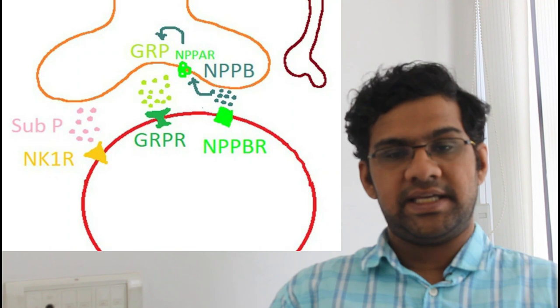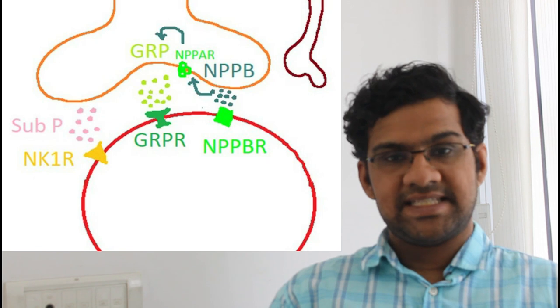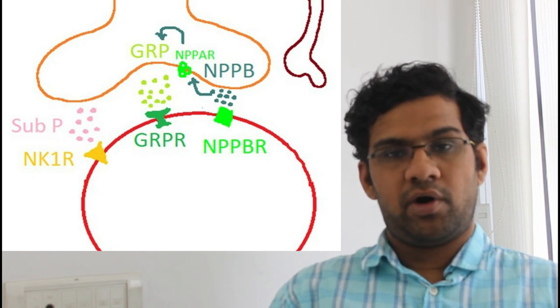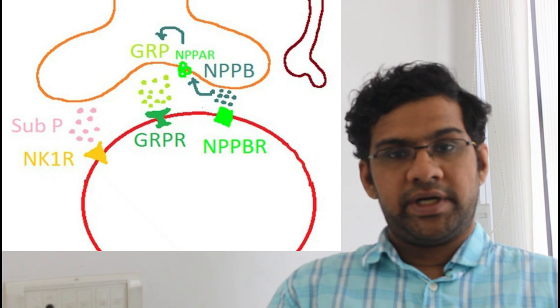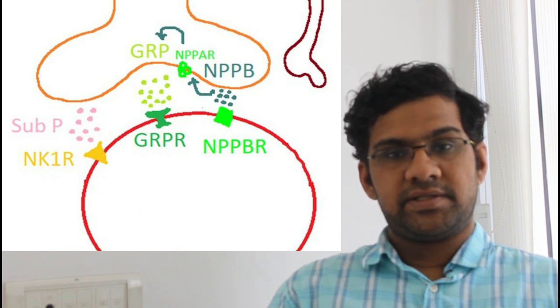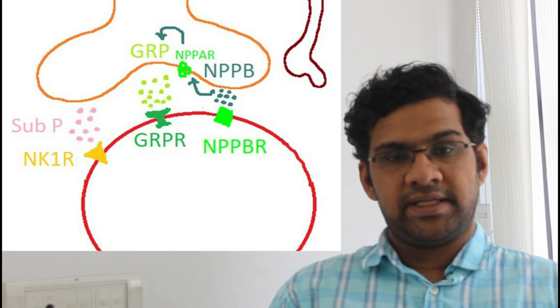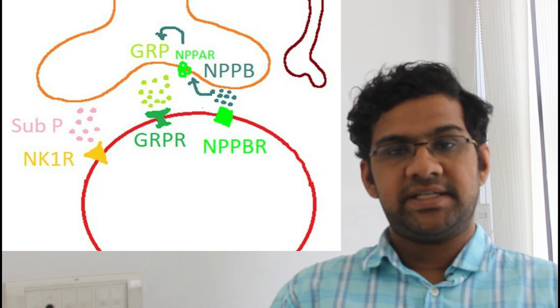Other important neurotransmitters which help releasing the itch are substance P, natriuretic polypeptide B, and gastrin-releasing peptide, which is in short called as GRP. Natriuretic polypeptide B further stimulates the receptors natriuretic polypeptide A and further triggers the production of gastrin-releasing peptide, which is a major transmitter of itch sensation. That is how the itch gets transmitted in the spinal level.